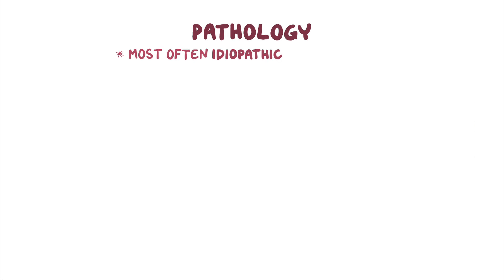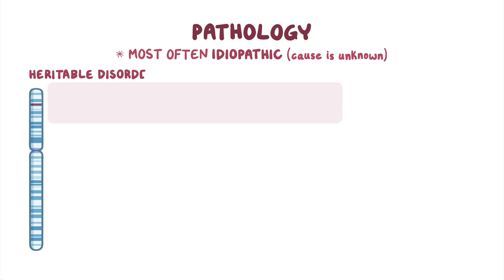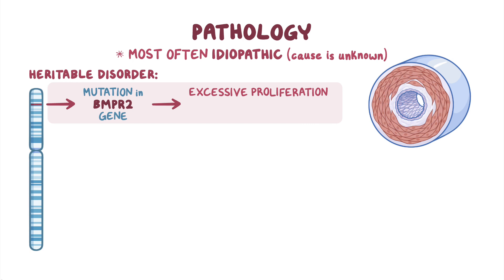PAH is most often idiopathic, which means that the cause is unknown. Occasionally, PAH can be a heritable disorder due to mutations in genes such as the BMPR2 gene. Without this gene working, there's excessive proliferation, or rapid reproduction, of the smooth muscle cells in blood vessels.